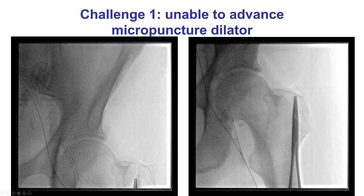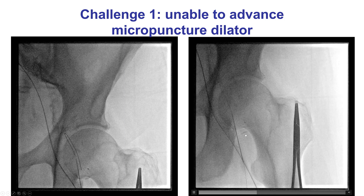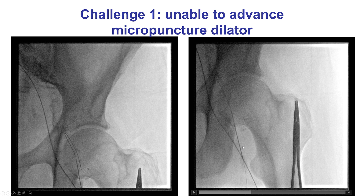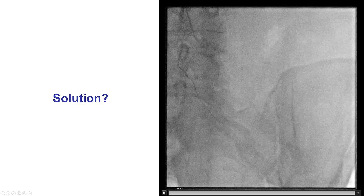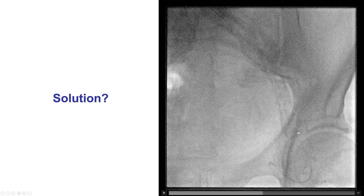We obtained a left common femoral axis, similar to before. However, we were unable to advance a micropuncture dilator kit over the micropuncture guide wire. This can happen sometimes in vessels that have been accessed several times. In this case, there's probably a lot of scar tissue from the previous coronary and peripheral revascularization procedures. Moreover, when we were trying to advance the microcatheter dilator, there was kinking in the subcutaneous tissue, something that is critical to appreciate before trying to advance more equipment because this can lead to loss of guide wire position and significant bleeding.